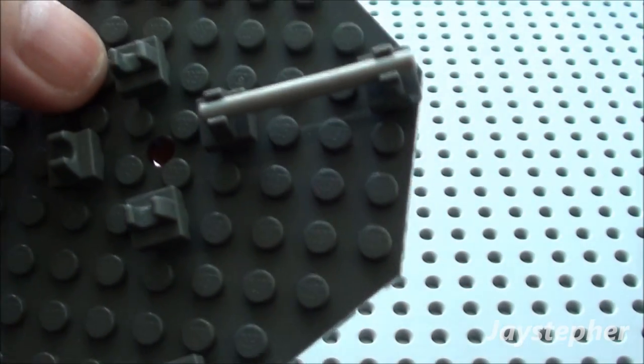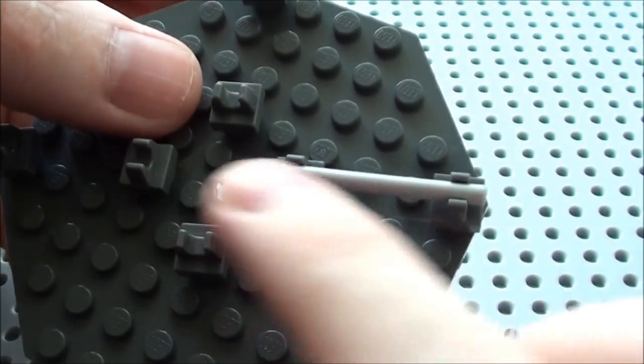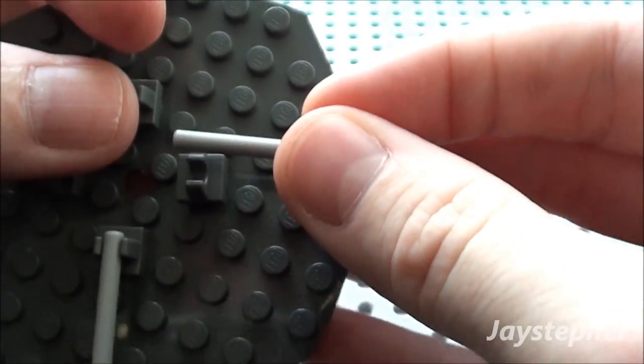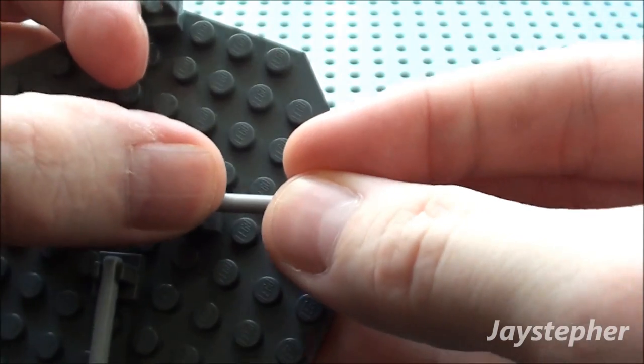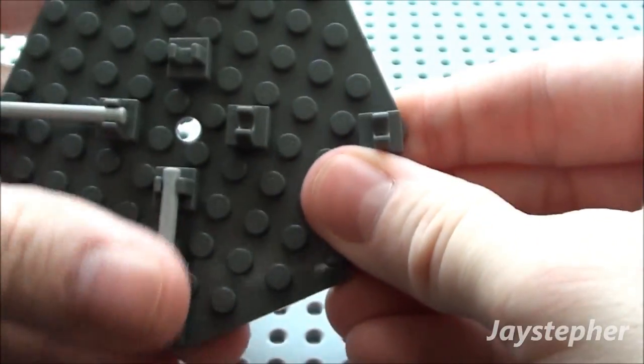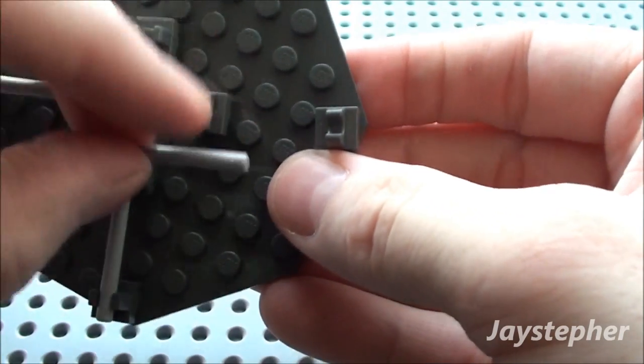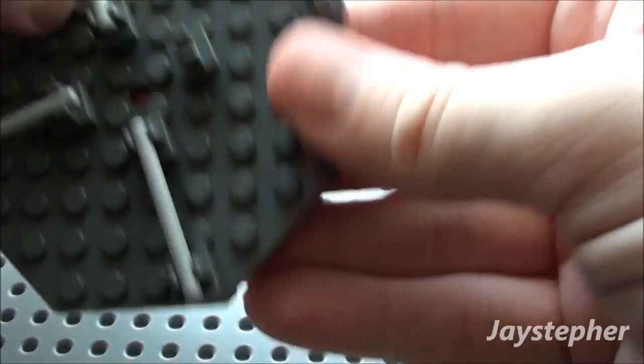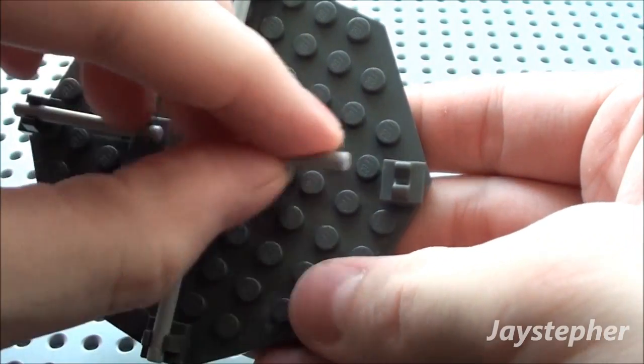And then our grip plates are straightened out. So we're going to do this four times. We're just going to come around. And then our last handlebar.